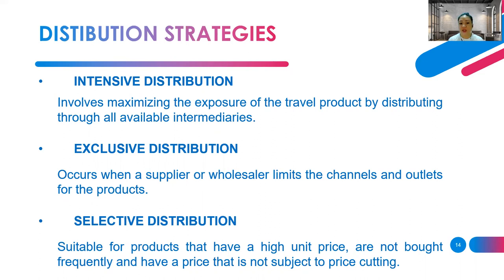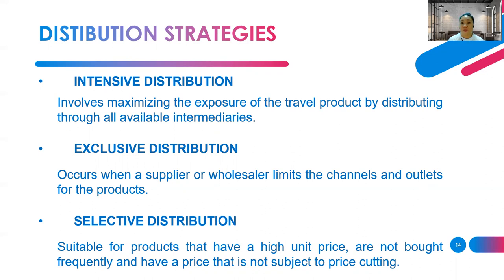In exclusive distribution, a supplier or wholesaler limits the channels and outlets for their products by choosing an exclusive distributor. An example is automobiles, where a specific brand can only be purchased through their own outlets. Selective distribution is suitable for products with a high unit price that are not bought frequently and are not subject to price cutting — for example, luxury brands like smart watches, which have selected outlets where consumers can only purchase those products.